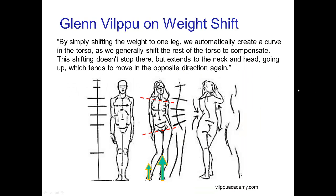Glenn Vilpu, great teacher, puts this very nicely. He says, by simply shifting the weight to one leg we automatically create a curve in the torso as we generally shift the rest of the torso to compensate. The shifting doesn't stop there but extends to the neck and the head going up which tends to move in the opposite direction again.